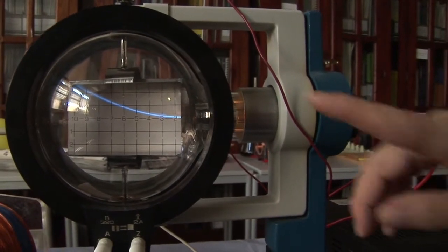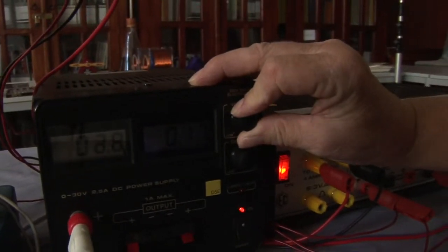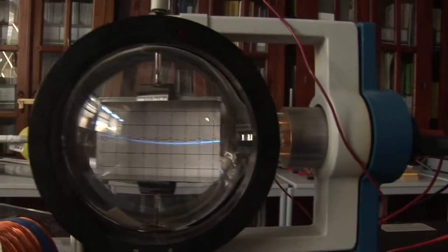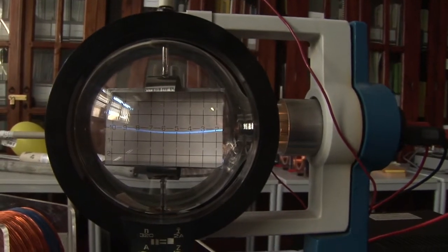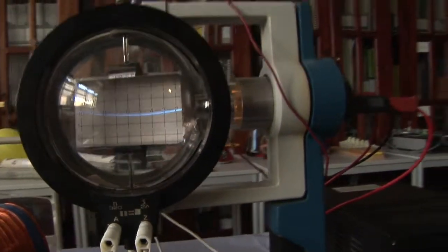If I put the magnetic field back on, you can see that it's pulling the beam back down again. And when we've got it just about straight, we have the balance between the electric field and the magnetic field.